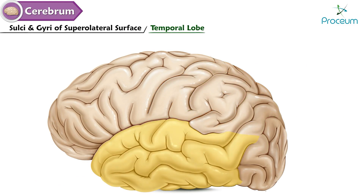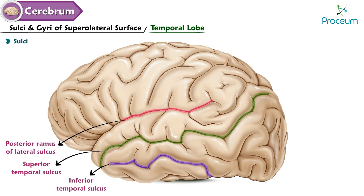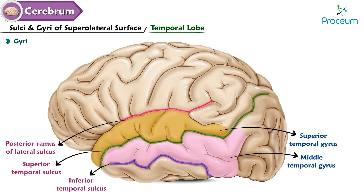The sulci of the temporal lobe include the posterior ramus of the lateral sulcus and the superior temporal sulcus.